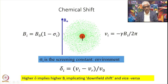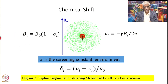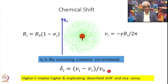Sigma_I is the screening constant, which varies depending upon the environment of your molecule. The precessional frequency of a particular nucleus is omega_I, or in terms of frequency in hertz, it is minus gamma B_I divided by 2 pi. Since this depends on magnetic field strength, we define a quantity delta_I equal to (nu_I minus nu_R) divided by nu_0, where nu_R is a reference compound. Nu_0 is your spectrometer frequency corresponding to B0.